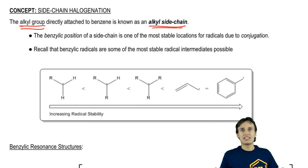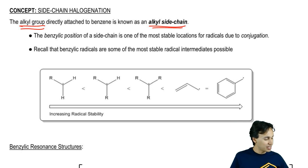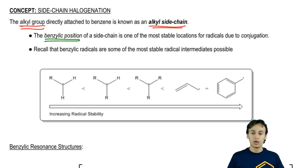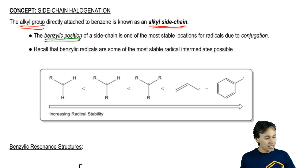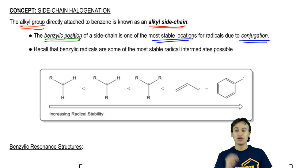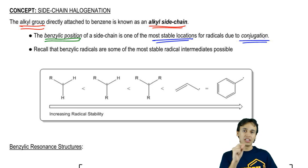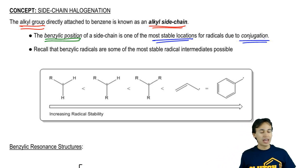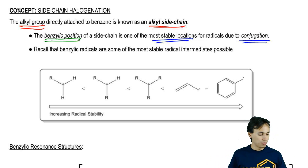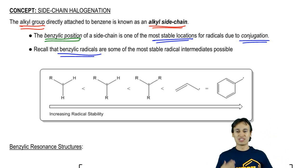These R groups, even though they might seem like just a normal R group, are actually special because they contain what we call a benzylic position. The benzylic position is the position next to the benzene. This position is uniquely stable — uniquely stable due to conjugation. So if you can put a reactive intermediate on that benzylic position, it's going to be more stable than normal because of conjugation and resonance. Benzylic radicals in particular are actually the most stable radicals out there.